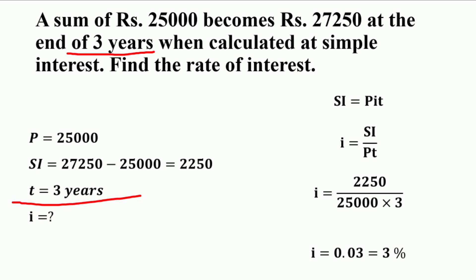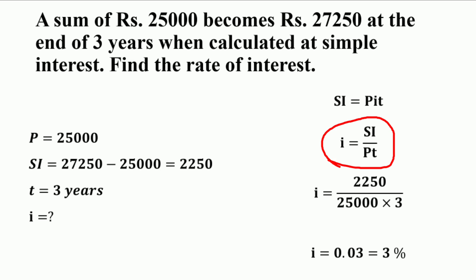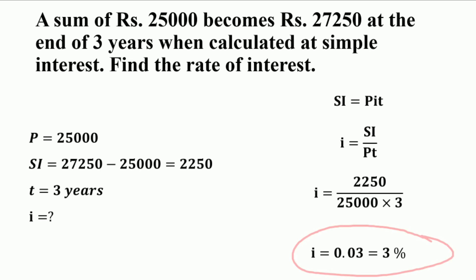The time period T is 3 years, and we need to find the rate of interest I. From the equation SI = P × I × T, isolating I gives I = SI / (P × T). Substituting the values: I = 2250 / (25000 × 3). Solving this gives I = 0.03, which means the rate of interest is 3%.